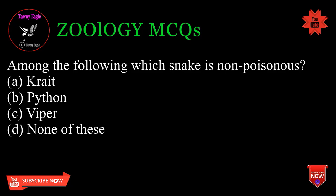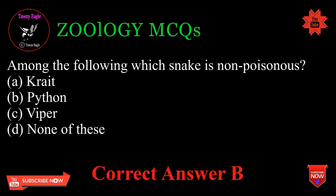Among the following, which snake is non-poisonous? A. Krait, B. Python, C. Viper, D. None of these. Correct answer: B.